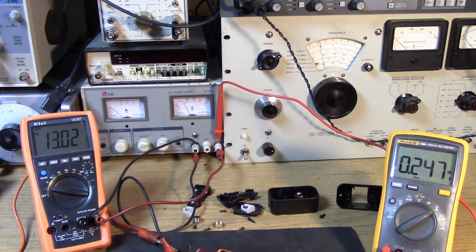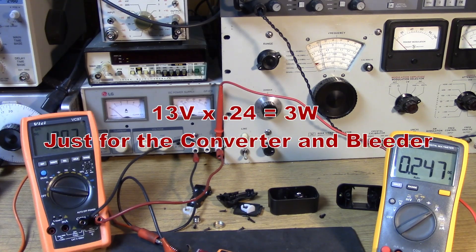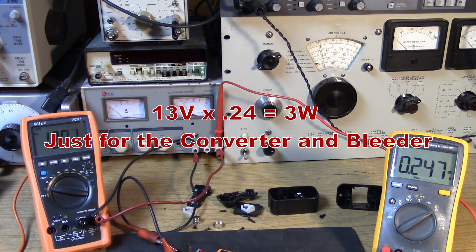There's 13 volts. Okay. So, you can see now, not much change in the current. A little bit of change. Next, let's key the transmitter.